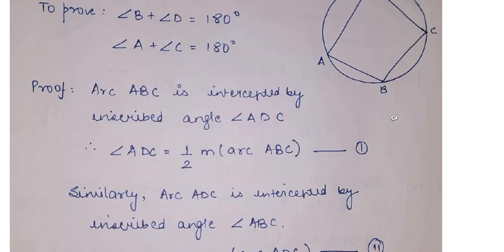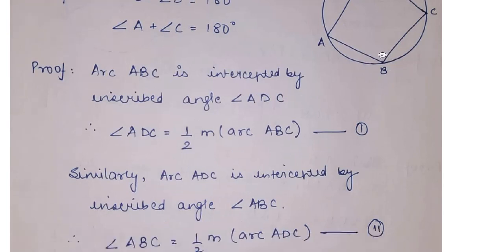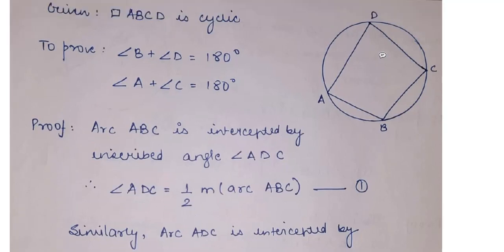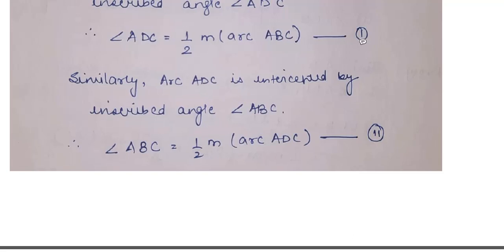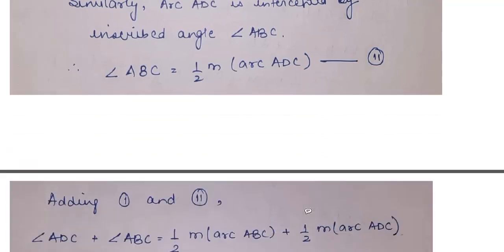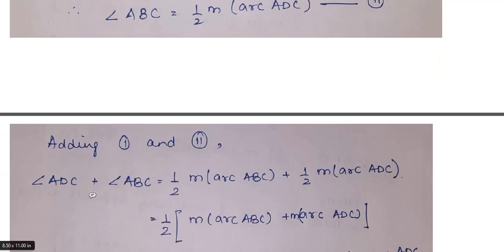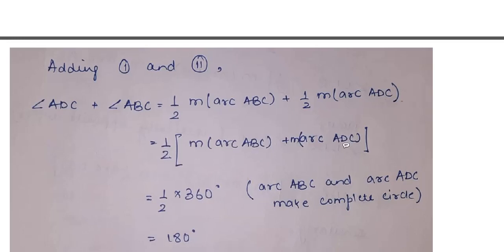Similarly, if I look at angle B, angle B is inscribed by the arc ADC. So angle B is half of the measure of arc ADC. Now, what I am going to do is, I am naming this equation 1, naming this as equation number 2. I am going to add 1 and 2 together. When I add 1 and 2, I will get angle D plus angle B is half of arc ABC plus half of arc ADC. Both have half common, I can take that outside. It's half of arc ABC plus ADC.